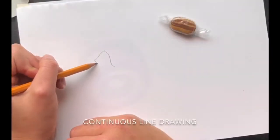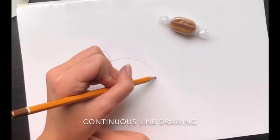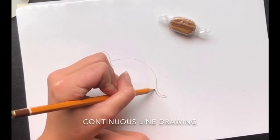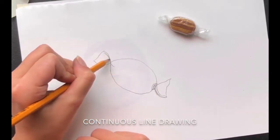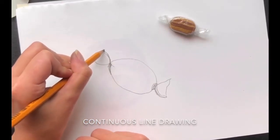Right, so for the last drawing approach is continuous line drawing. Now, the one rule with continuous line drawing is that you never lift your pen or pencil up. It needs to be on the paper throughout.